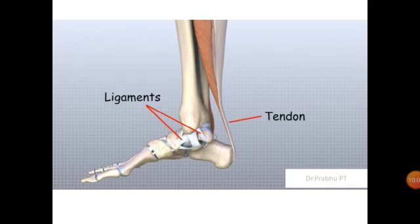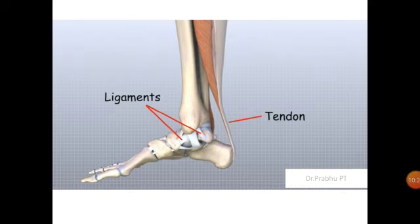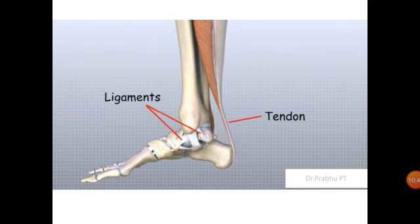A tendon is a fibrous connective tissue which attaches muscle to bone. You can see a muscle at the back of the ankle and leg attached to the calcaneus below — the lower portion is the tendon. Both ligaments and tendons are made up of fibrous connective tissue, but their functions differ. Ligaments appear as crisscross bands that attach bone to bone and help stabilize joints.